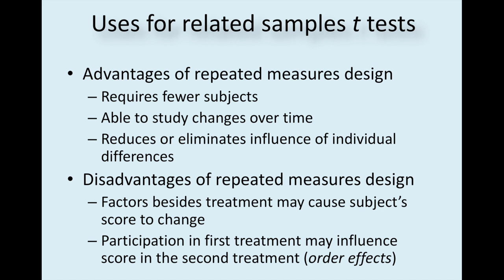Some of the advantages and disadvantages of repeated measures designs. One of the main advantages is that it requires fewer subjects. I only have to get 20 people together and do a pre-test and post-test, and all 20 people will give me 20 different scores. And I can study changes over time. I can see if the students were better at using their tea table after going to an hour of tutoring. And it also reduces or eliminates influence of individual differences. Because I'm not having to match them with someone close. I'm matching them with them themselves.